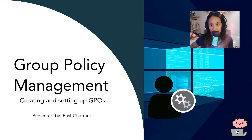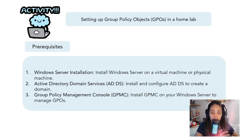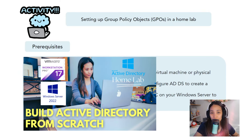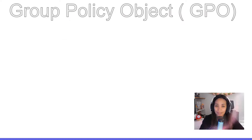Before we get started and proceed with creating GPOs, make sure that you have these prerequisites installed first. Make sure that you have a Windows Server installed with Active Directory tools and also GPMC tool installed, because that's what we're going to need to create the GPOs. If you don't have any of these installations yet, I have a video that covers how to install Windows Server on a VM and installing Active Directory tools.